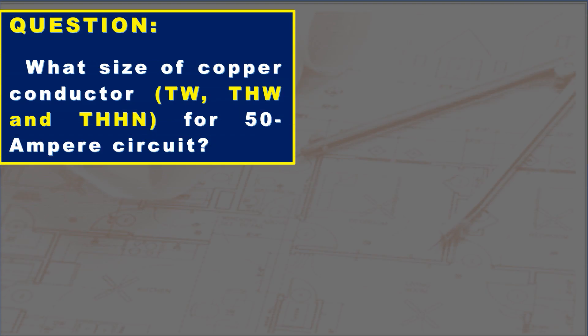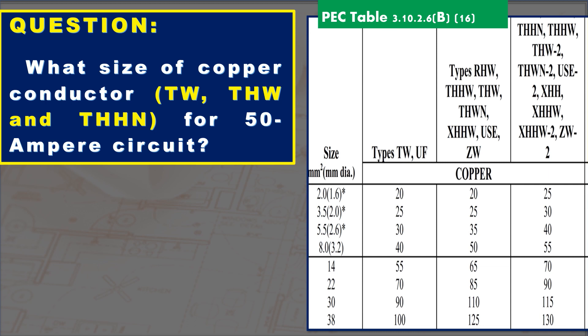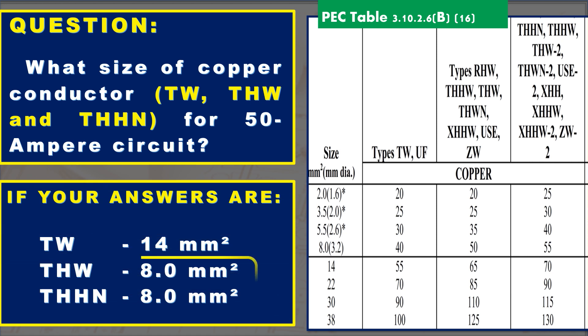What size of copper conductor, TW, THW, and THHN, for the 50-ampere circuit for the condition of Table 3.10.2.6B16? If your answer is either 8-squared-millimeter THW or 8-squared-millimeter THHN, sorry guys, but that is just a myth.